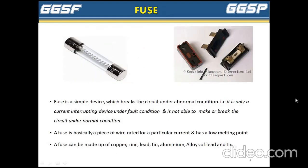Next, fuse. A fuse is a simple device which breaks the circuit under abnormal conditions. That is, it is only a current interrupting device under fault conditions and is not able to make or break the circuit under normal conditions. A fuse is basically a piece of wire rated for a particular current and has a low melting point. A fuse element can be made up of copper, zinc, lead, tin, aluminium, or alloys of lead and tin.